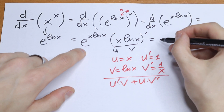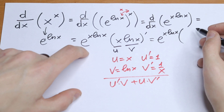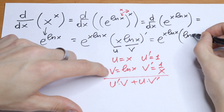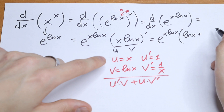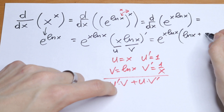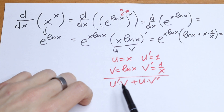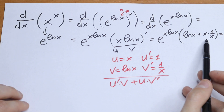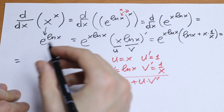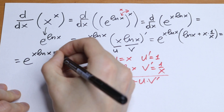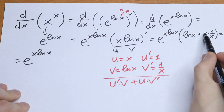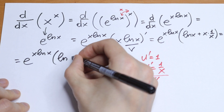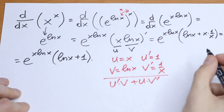Writing out the full expression, we have e to the power x·natural log x, multiplied by the result of the product rule in parentheses: u prime·v is 1 times natural log x, plus u·v prime is x times 1 over x. The x's cancel, so we get natural log x plus 1.